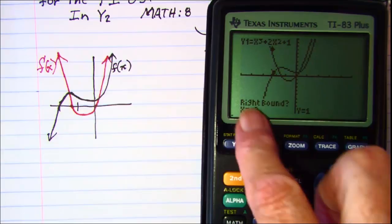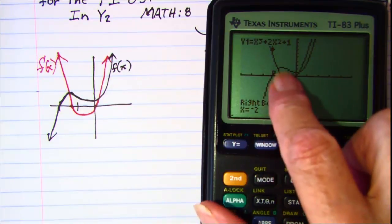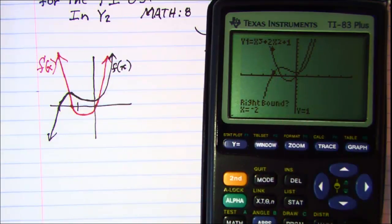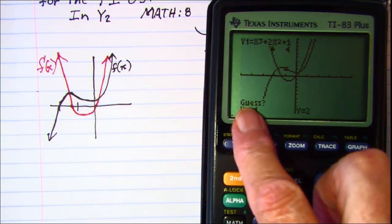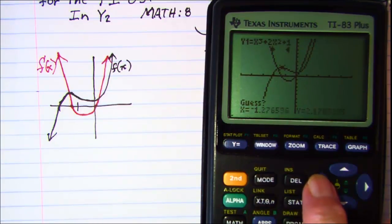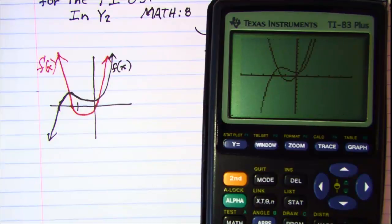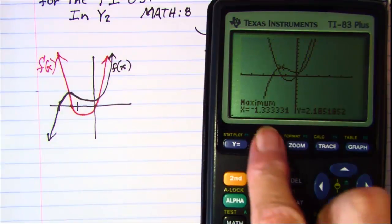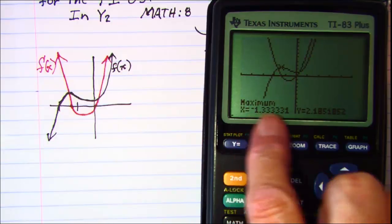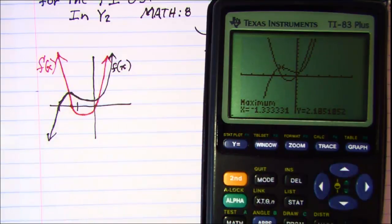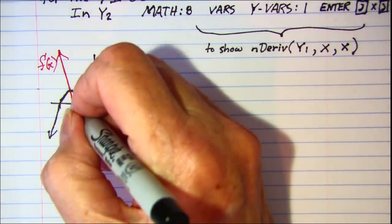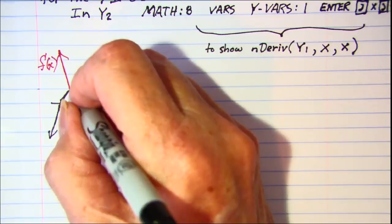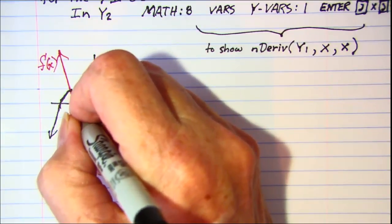And then it asks us for a right bound. So we could use negative 1 as our right bound. I'll just enter it instead of moving my cursor. And then they want to guess. So I'm going to move the cursor to about where it hits its maximum. And it looks like it hits its maximum at a negative 1 and 1 third. So this point then is right here and here is a negative 1 and 1 third.